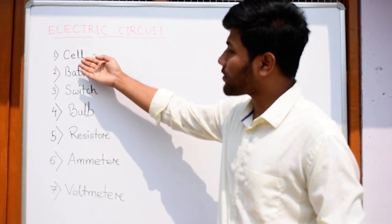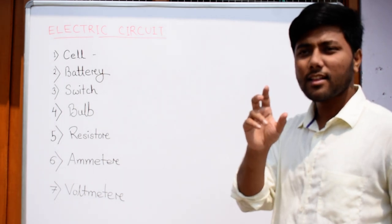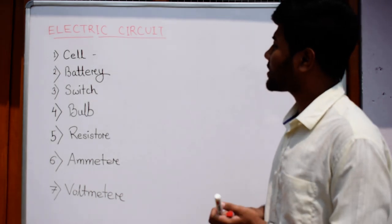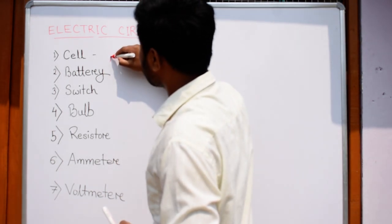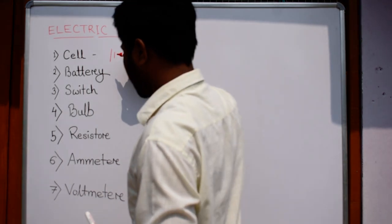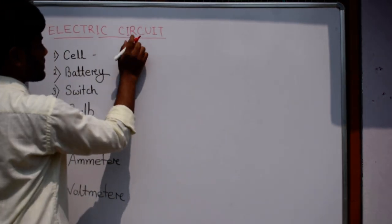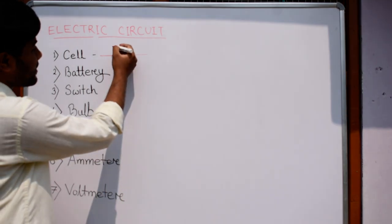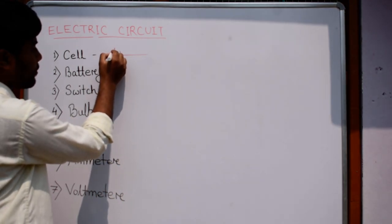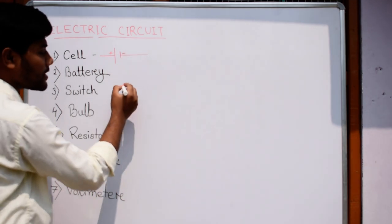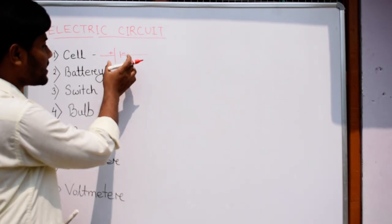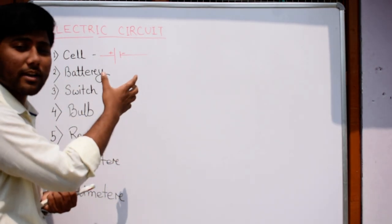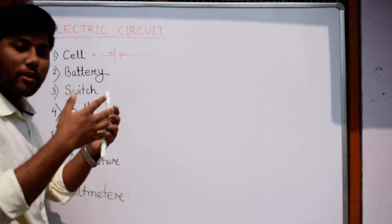Let us discuss. At first, what is a cell? Cell is the source of the current. We denote it with this symbol, where the longer line indicates the positive and the shorter line indicates the negative. This is the cell. A cell is the source of electric energy.